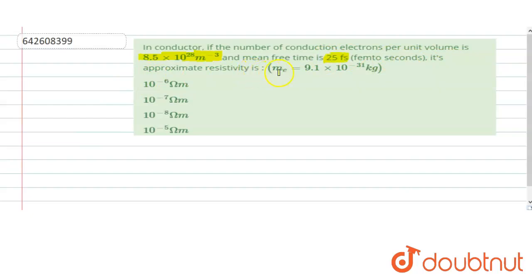So we have to find its approximate resistivity. And mass of the electron is given to us as 9.2 × 10⁻³¹ kg. So let's understand the concept.